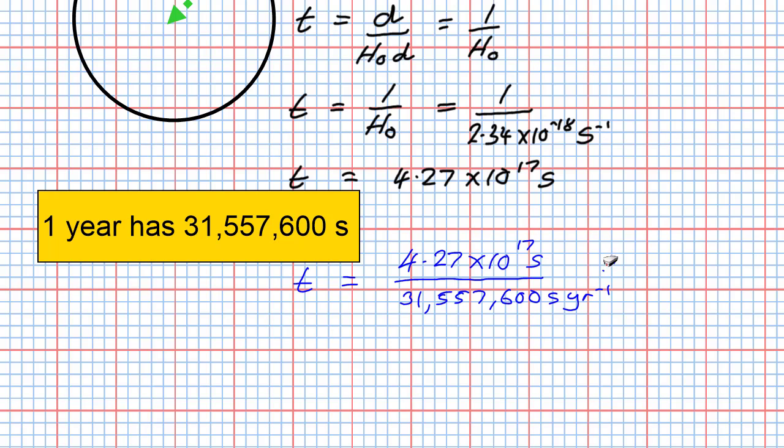And that's going to give us then the value for the age of the universe in terms of years. So we do that in our calculator, we end up with a value of t equal to 1.35 times 10 to the power 10 years. An amazing amount of years.